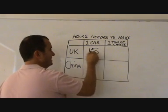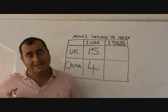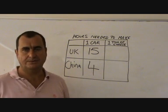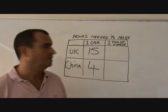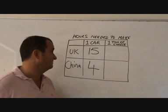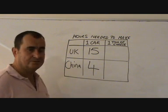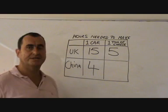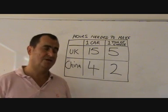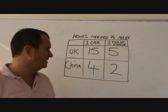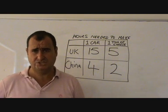In the UK it takes 15 hours to make a car, but in China it only requires 4 hours. Assuming per-hour costs per worker are the same, it's clearly cheaper to make cars in China — China has absolute advantage in car production. For cheese, the UK requires 5 hours to make a tonne, and China only requires 2 hours. So China also has absolute advantage in cheese production. It seems there would be little point in China specialising in either good when they can make both more cheaply than the UK.